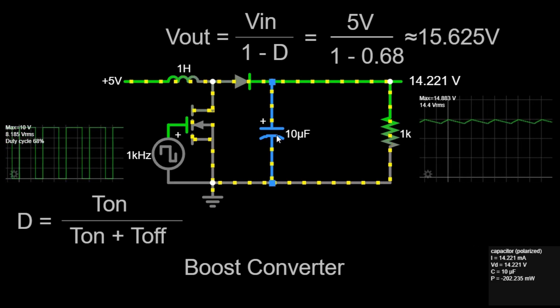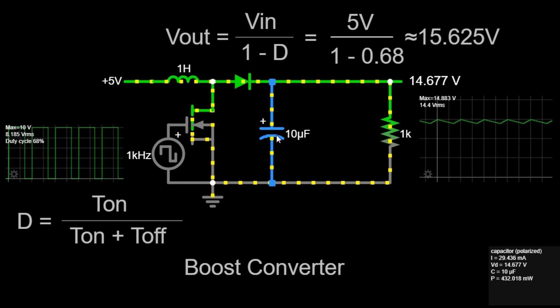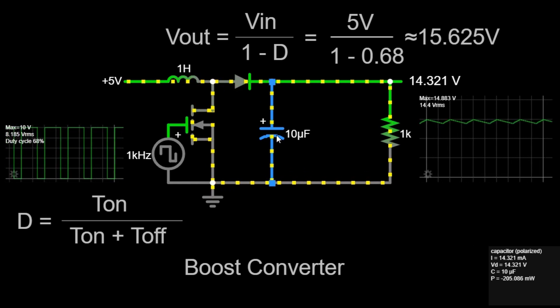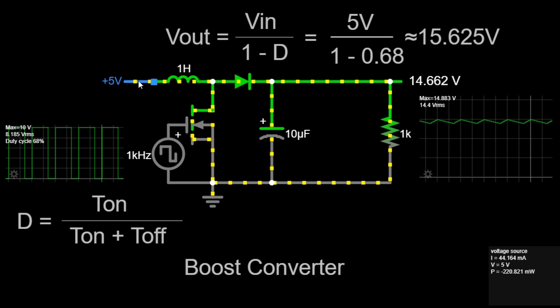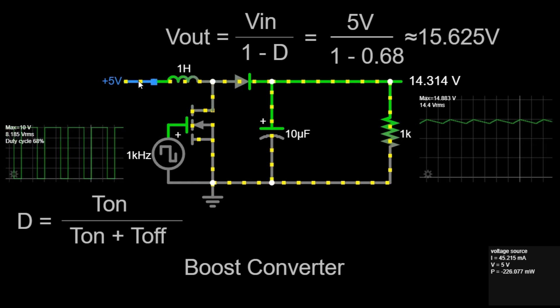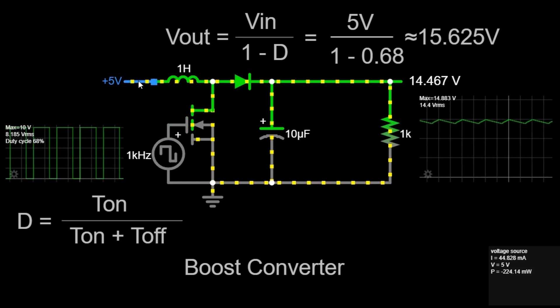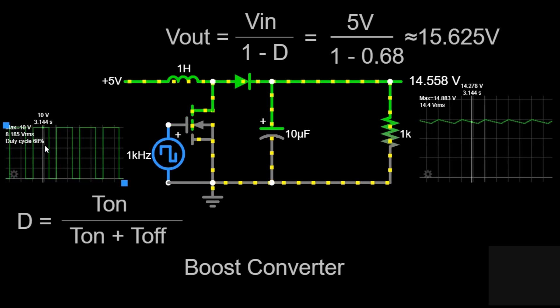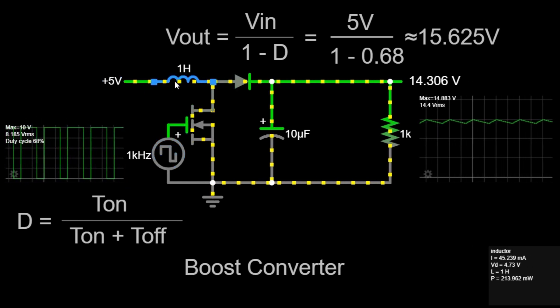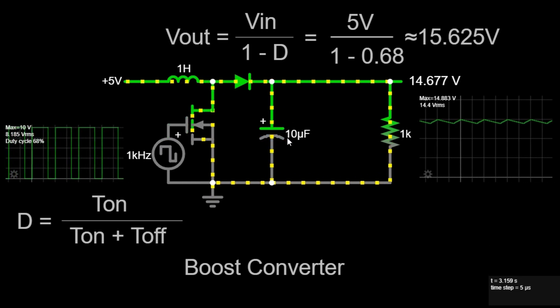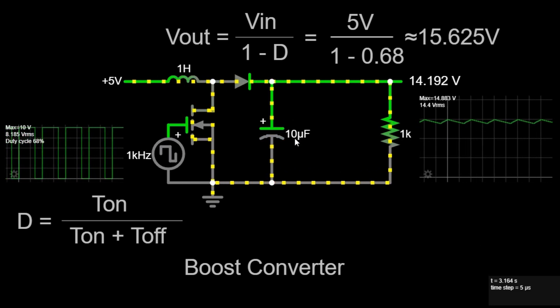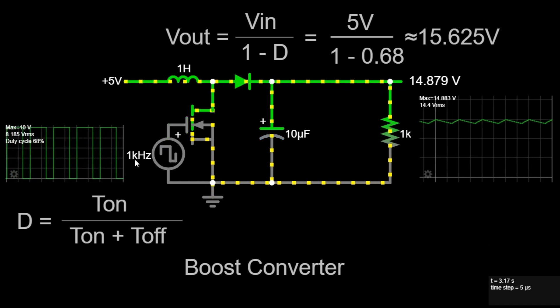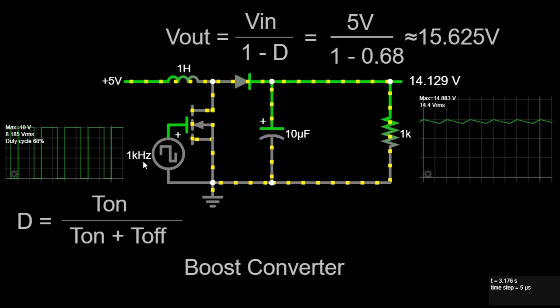Let's go through an example calculation using our circuit parameters. The input voltage, V in, is 5 volts. The duty cycle, D, is 68%, or 0.68. The inductor, L, is 1 henry. The capacitor, C, is 10 microfarads. The switching frequency, F, is 1 kilohertz.